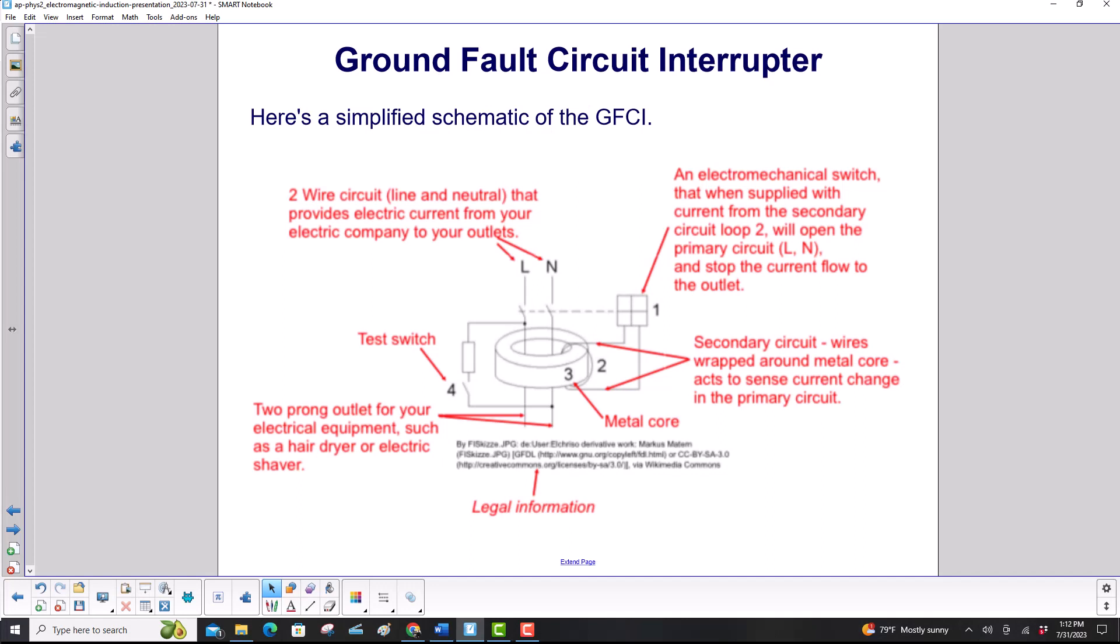Here's a simplified schematic of the GFCI. We'll start here, where you have the two wires that come in from the electric company that's supplying all your equipment, and that provides the electric current, and that goes into your outlets. Down at the bottom here, this is where your outlet is. This is where you would plug in your gear, such as a hairdryer or electric shaver.